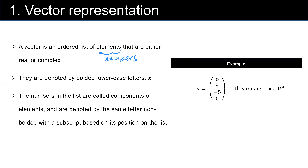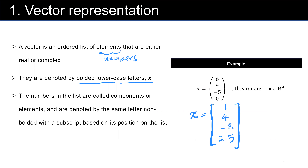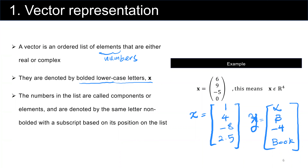Vectors are denoted by lowercase letters, such as x. For example, vector x is equal to 1, 4, minus 8, 2.5. Also, the elements of a vector could be different types. Let's call the second one vector y — its elements could be alpha, beta, minus 4, book. So the elements could have different natures.